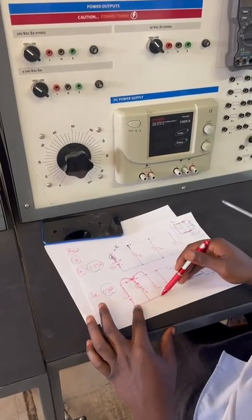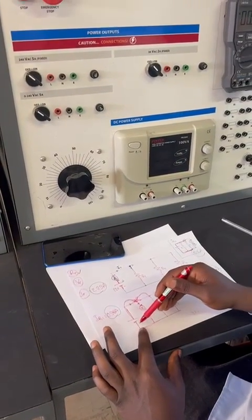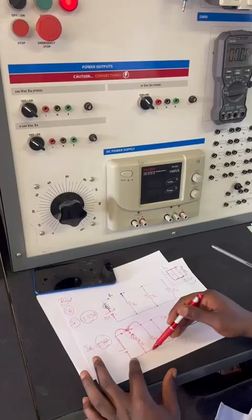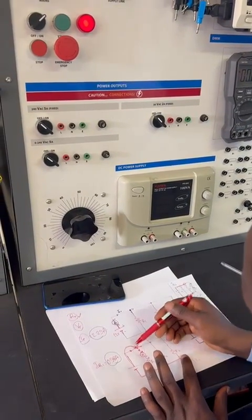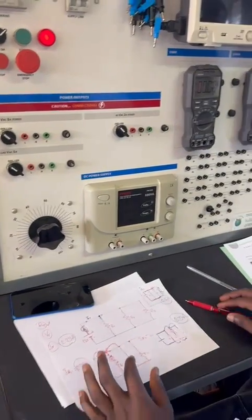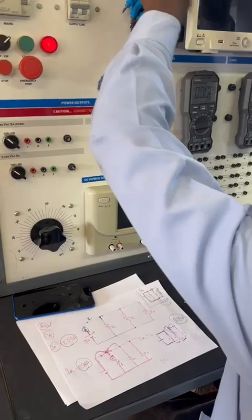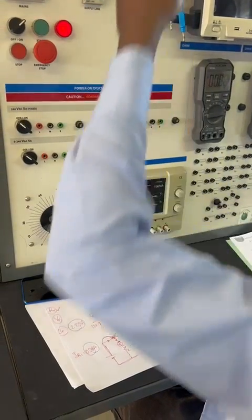Since there is no ammeter on the negative rail, we will make sure we connect all the negative rails. Then we will go backwards to connect our ammeter. So it says here for the negative rail,